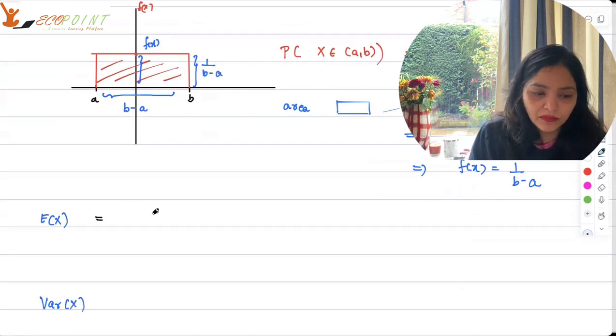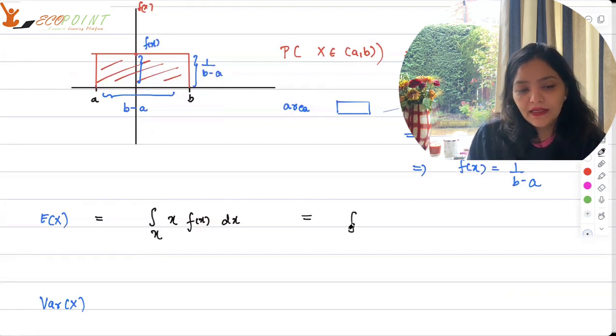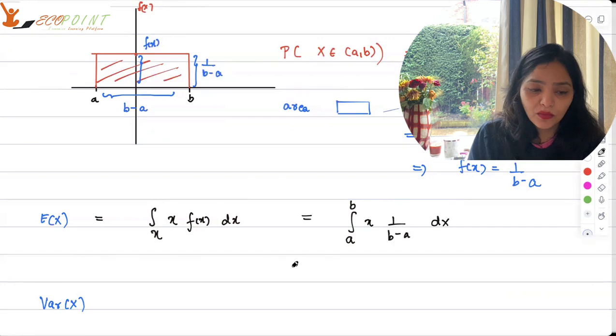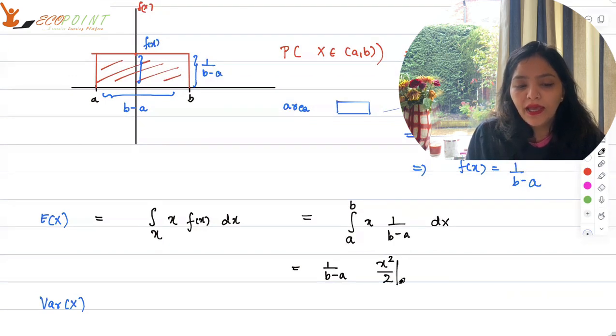Expected value of uniform. Expected value in general is integral x fx dx over all the x's. This time x's are from a to b, right? So over all the x's. This in our case will be a to b x into 1 upon b minus a dx. 1 upon b minus a is just a scalar quantity that can come out like this. And then you have integral x. Integral x is x square by 2 and the bounds are a to b.